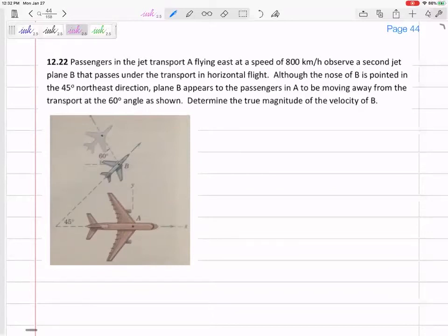So first of all, do you realize that this is a relative velocity problem? Obviously, it's in the relative velocity section of our book. But if you didn't know any better, how did we know this is a relative velocity problem? That line right there—plane B appears to passengers in A. It doesn't say relative, but that's what it means. Plane B with respect to A, right?